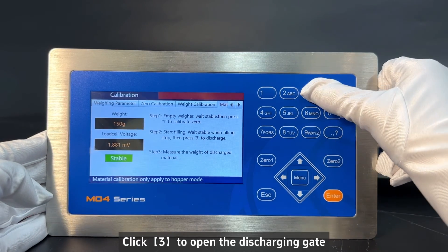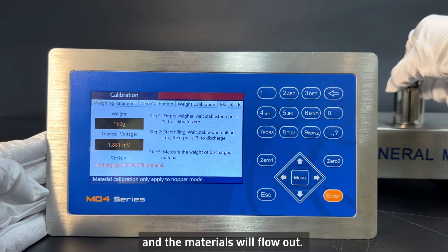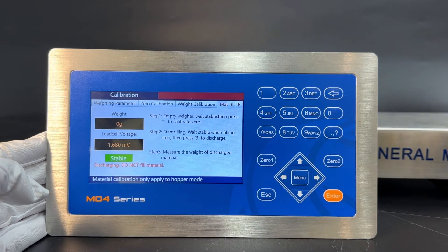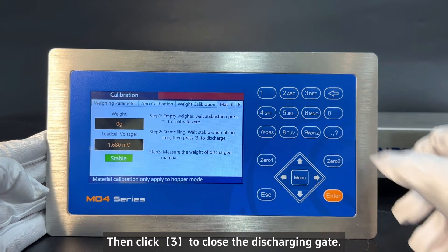Click 3 to open the discharging gate. And the materials will flow out. Then click 3 to close the discharging gate.